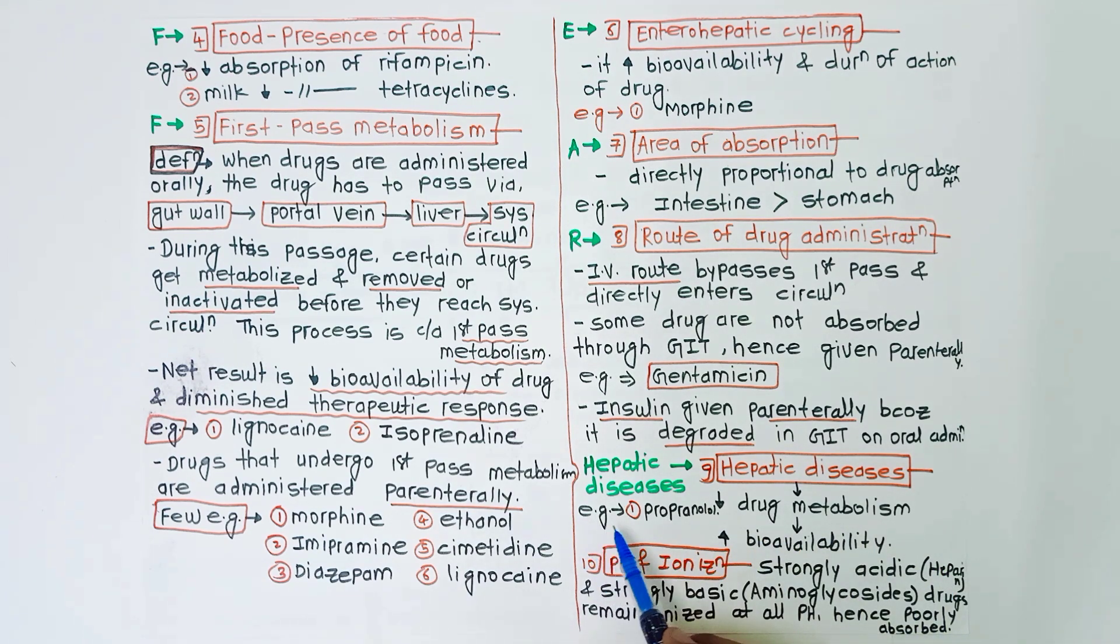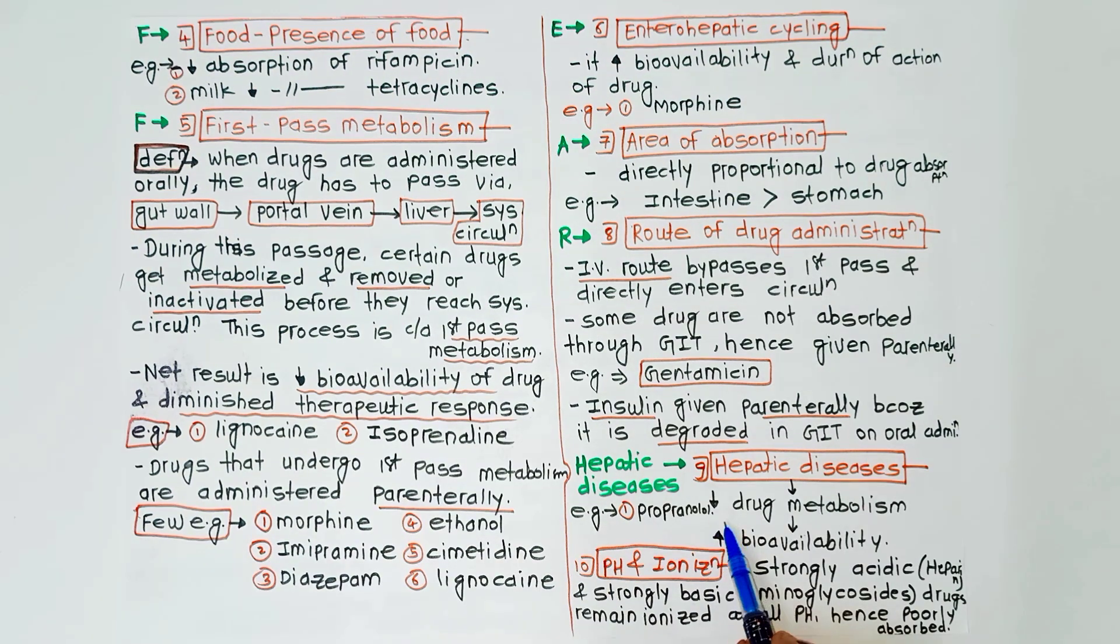Last factor which I didn't mention in the trick is pH and ionization. The strongly acidic like heparin and strongly basic like aminoglycosides drugs remain ionized at all pH and hence they are poorly absorbed. So the bioavailability of strongly acidic and strongly basic drug is low than the weakly acidic and weakly basic drugs.